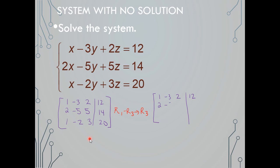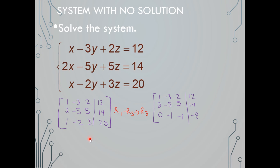The second row is unchanged. Row 3 becomes 0, negative 1, negative 1, negative 8, because we took row 1 and subtracted it from row 3. You can pause and verify: 1 minus 1, negative 3 minus negative 8 (a negative times negative becomes positive), negative 2 minus 3, and 12 minus 20 gives us that new row 3.